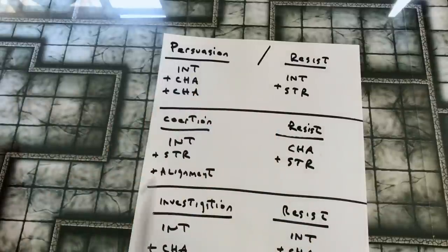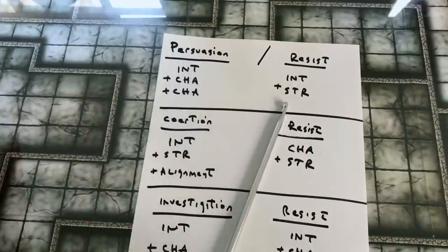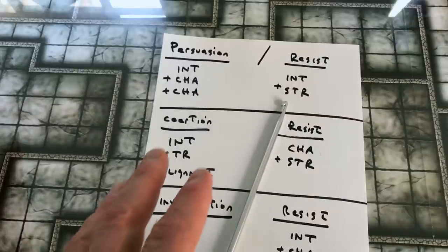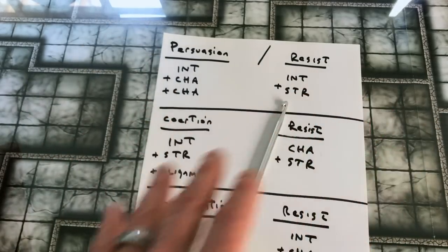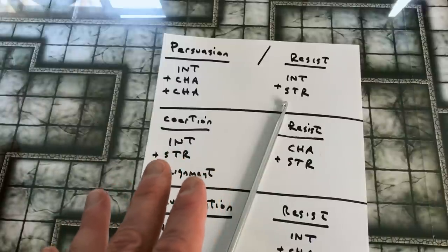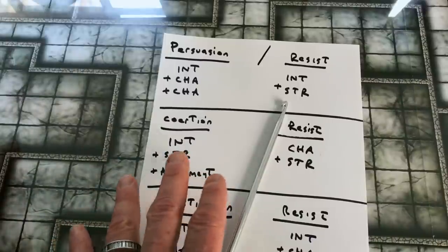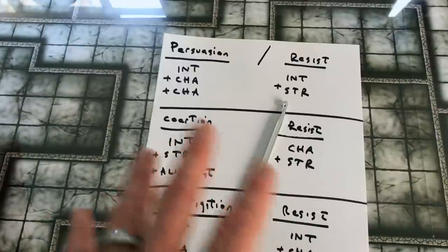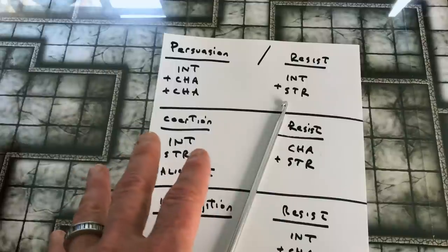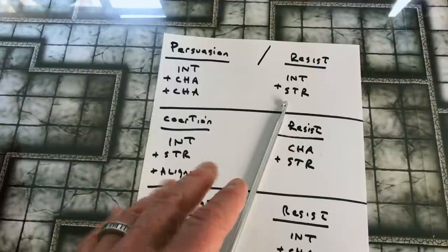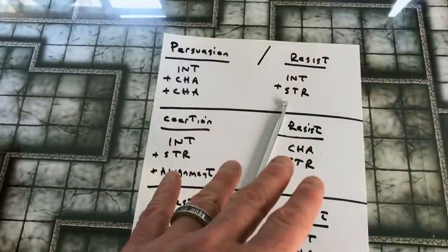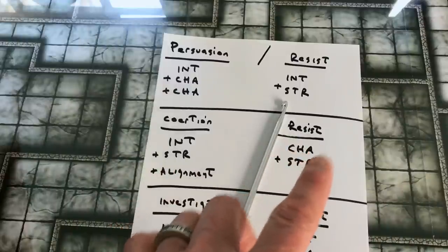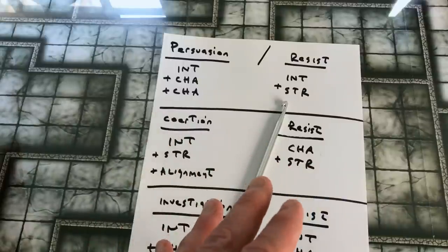There's also a resist value, so each of these values has two sides to it: the side of the character who is attempting it and then the side of the character who is resisting it. The resistance to your persuasion is a combination of your intelligence and strength. The strength value in Dallas is actually something called nerve, which does not translate into the system that I am using here, but I picked the closest one.